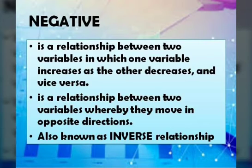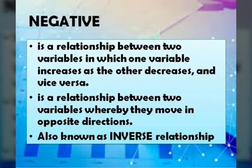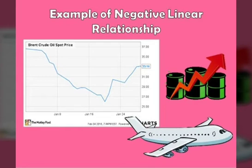Let us talk about the negative relationship, or negative correlation. When we say negative relationship, it is a relationship between two variables in which one variable increases as the other decreases, and vice versa. It is a relationship between two variables whereby they move in opposite directions, which is also known as inverse relationship. When one variable decreases, the other increases — and vice versa is a negative correlation too, in which one variable increases as the other decreases.